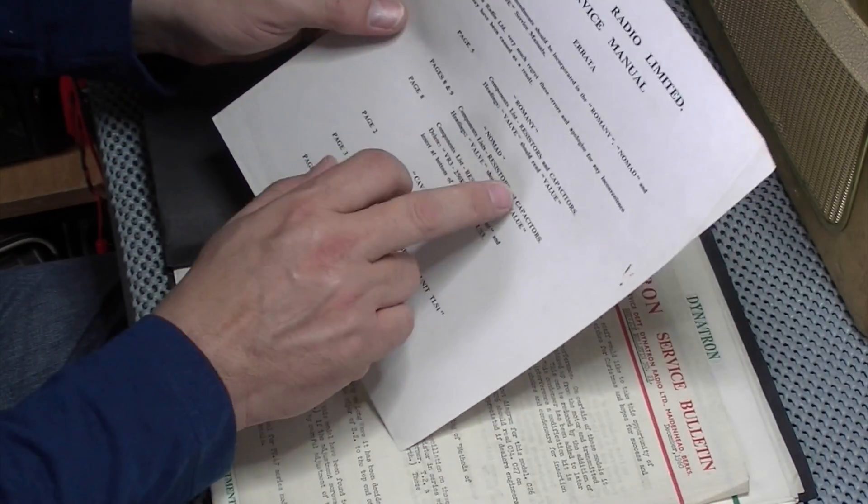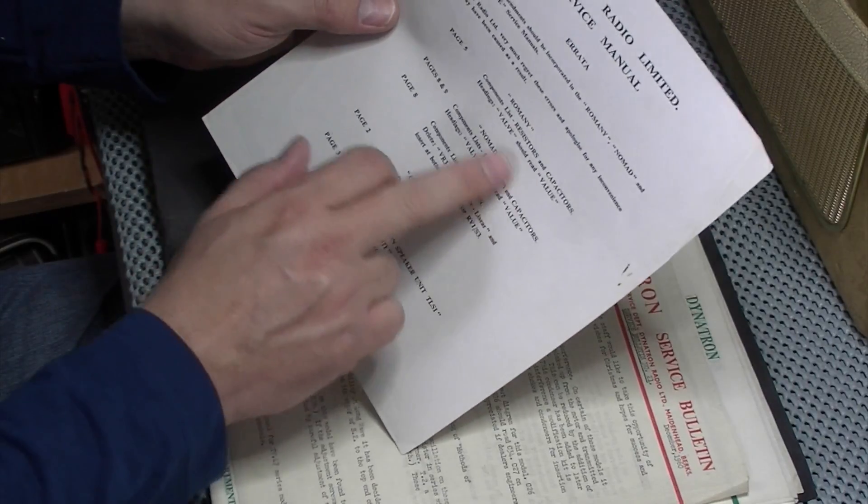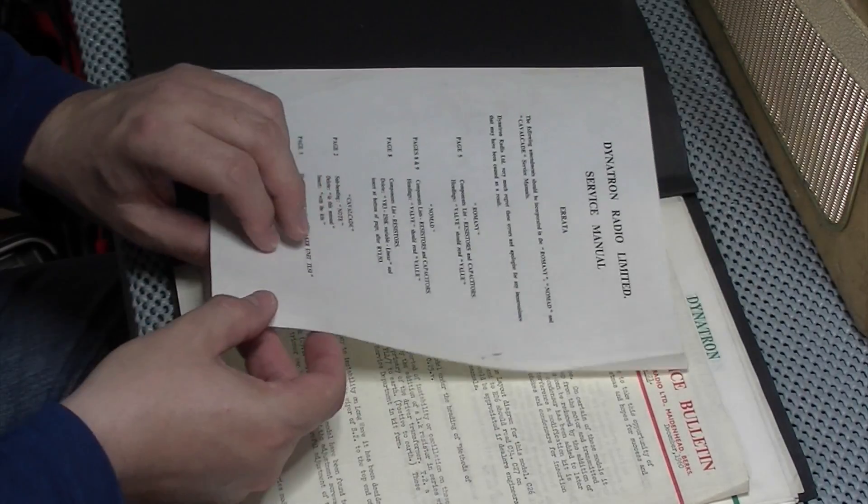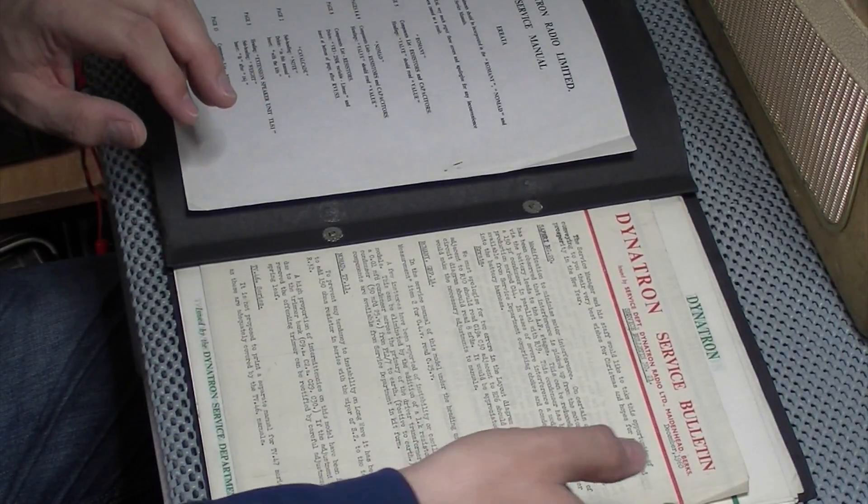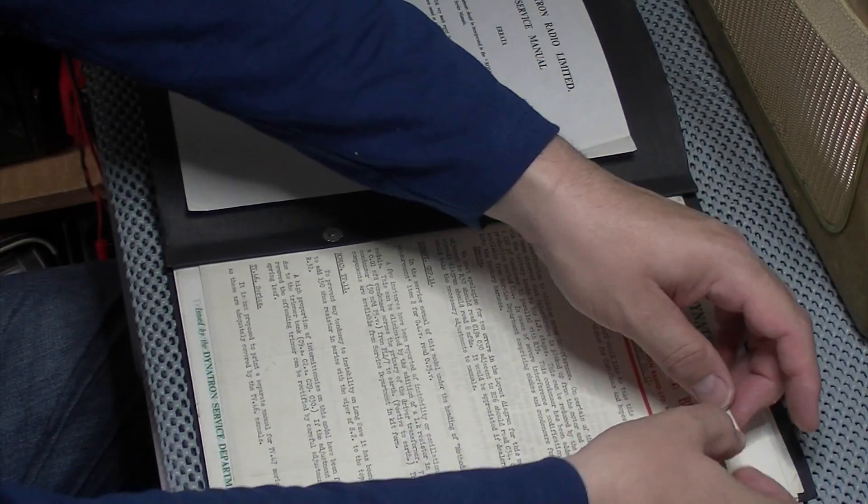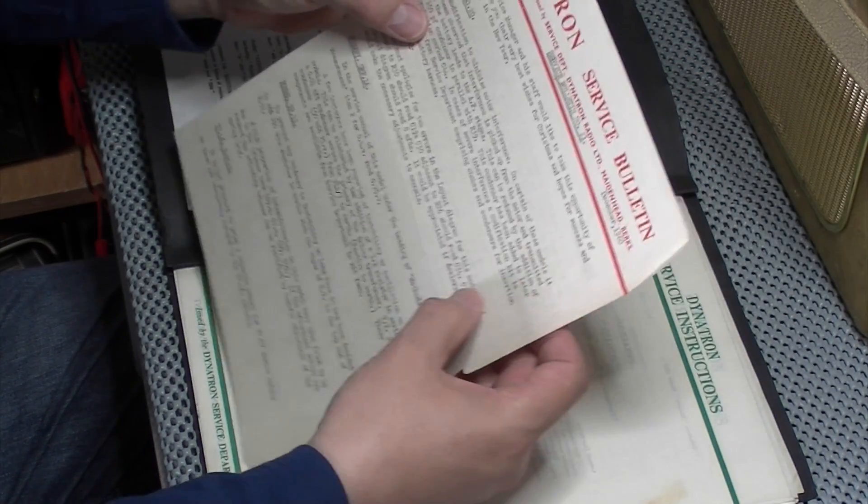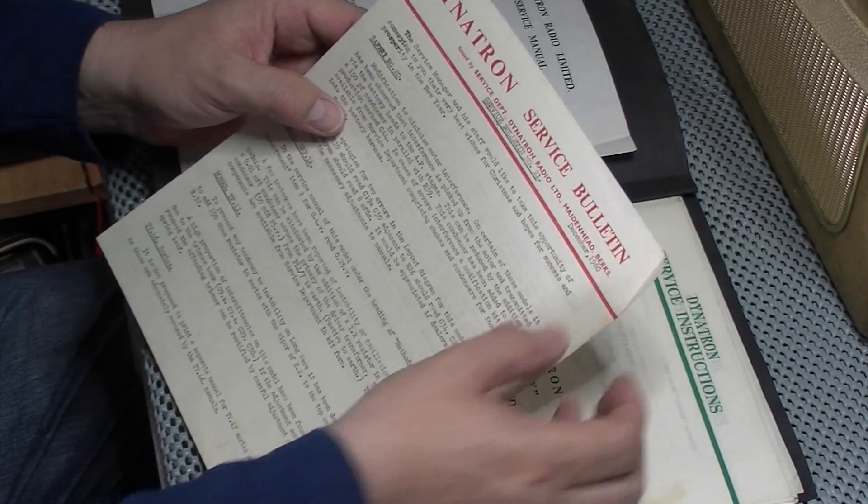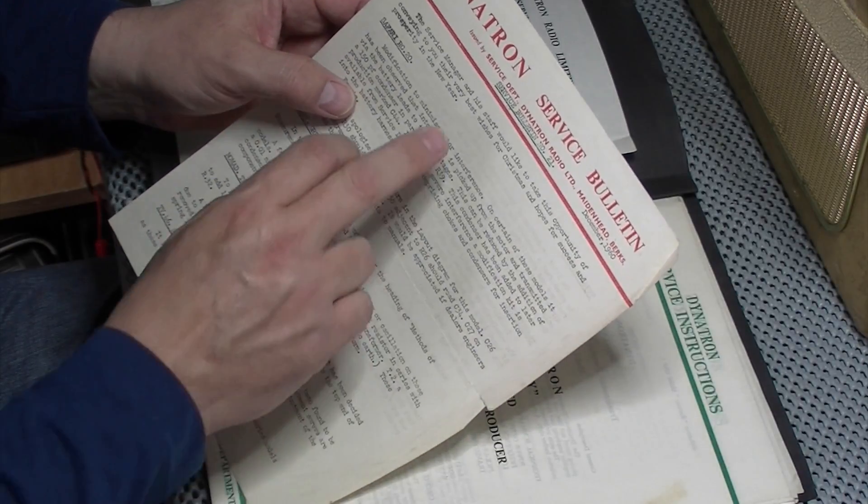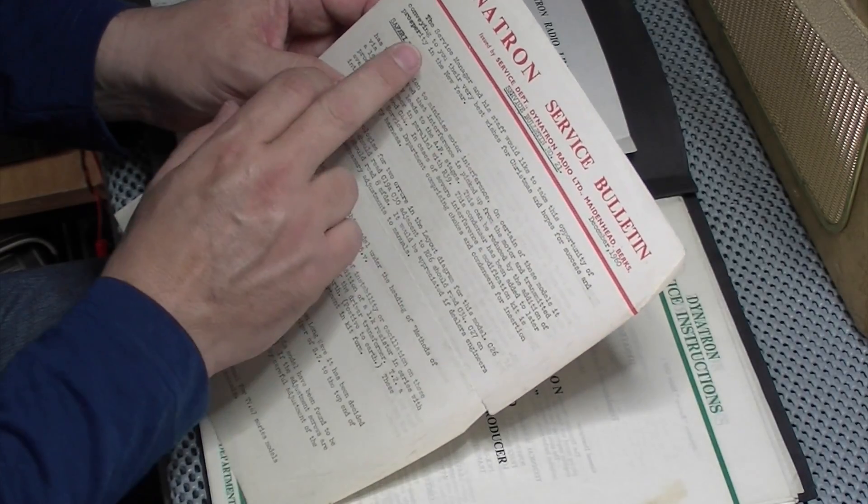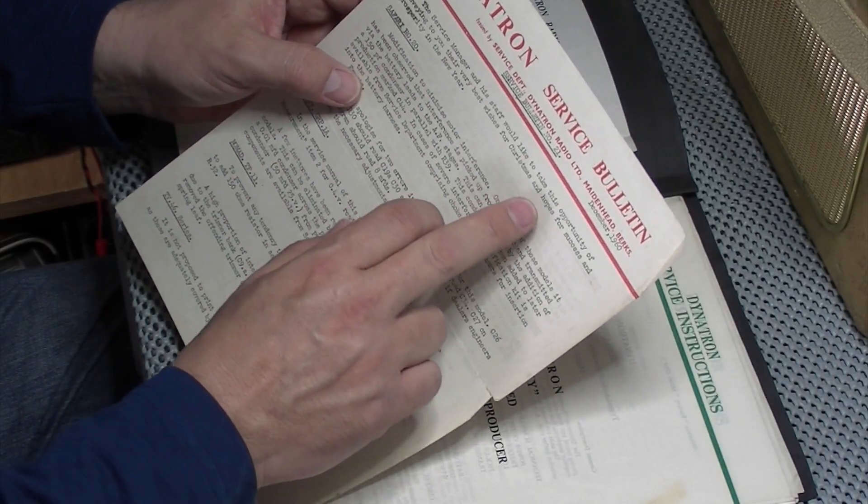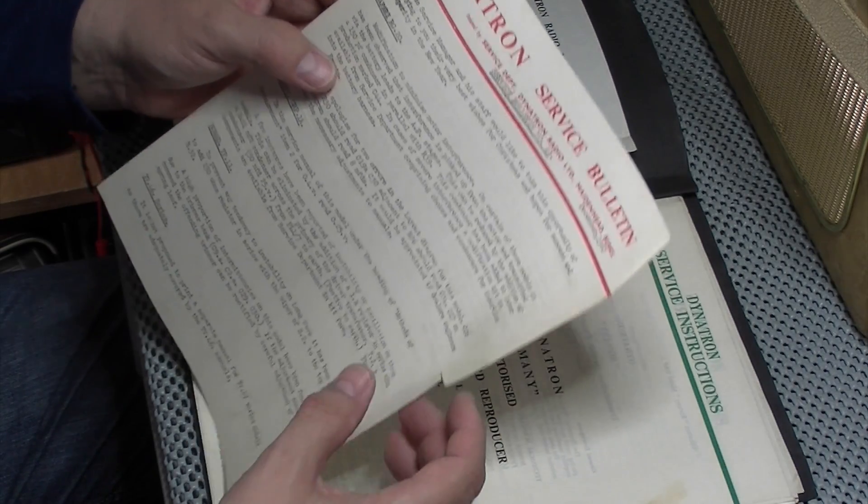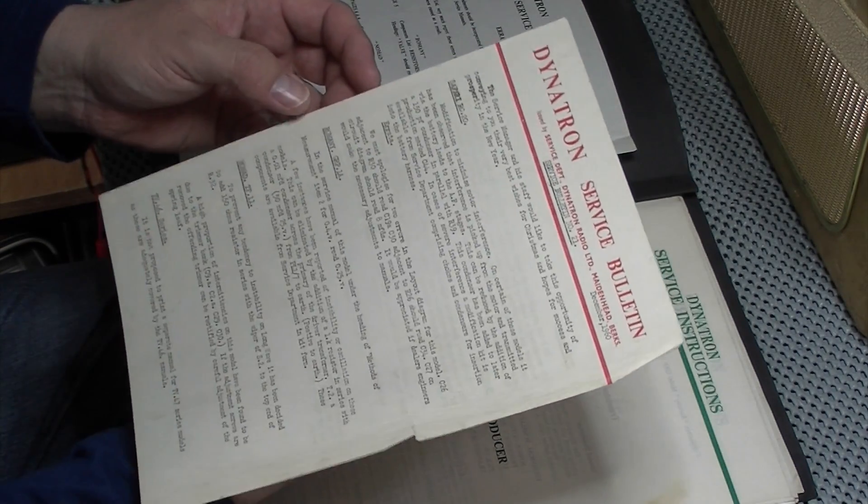So this is actually the original dealer's manual. Some lovely bits in this. We've got all the sort of updates, basically typos, things that they've got wrong in the main listing. We've got something here though which is really interesting, a Dynatron service bulletin from December 1960.